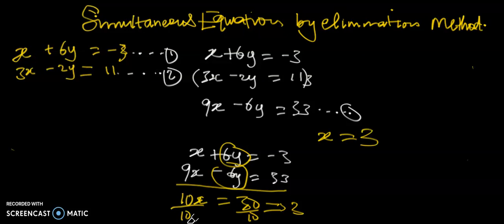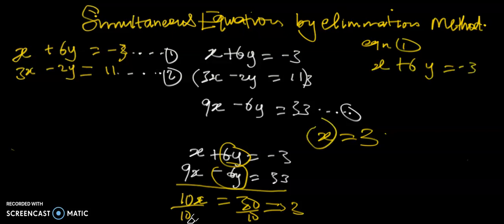We can use any of the equations. Let's take the first equation: x plus 6y is equal to negative 3. We know that x is 3, so substituting gives 3 plus 6y is equal to negative 3.